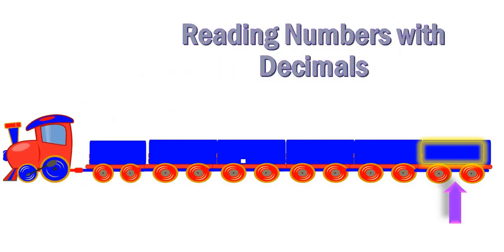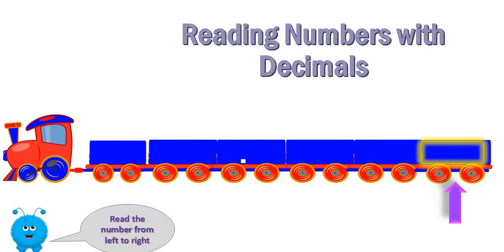Like all numbers, we must read from left to right. So we will start with the whole number part, then we will say 'and' — just for the decimal point — then we read the decimal part as it is, and we put at the end the last decimal place value.